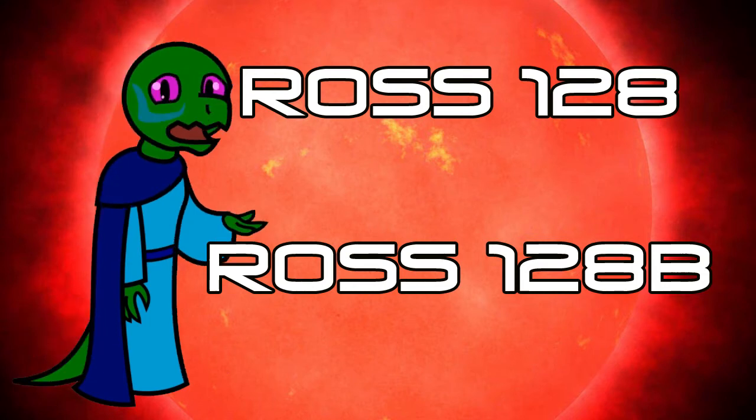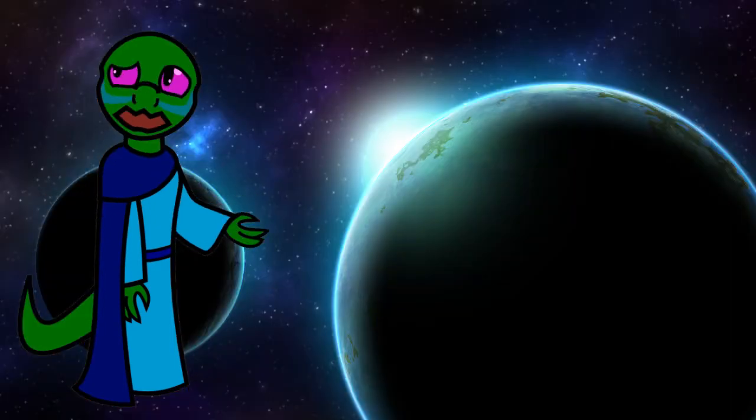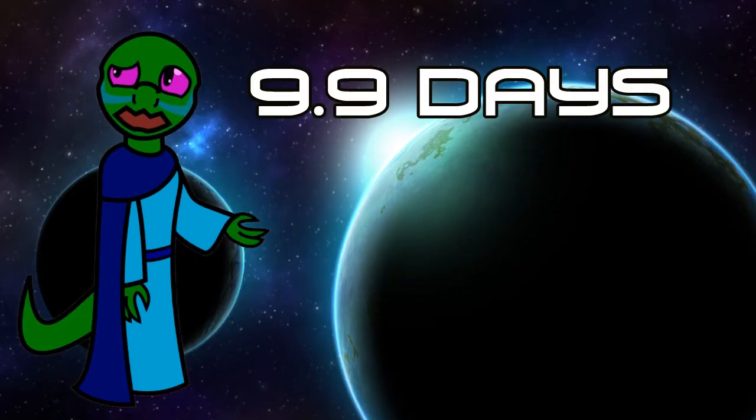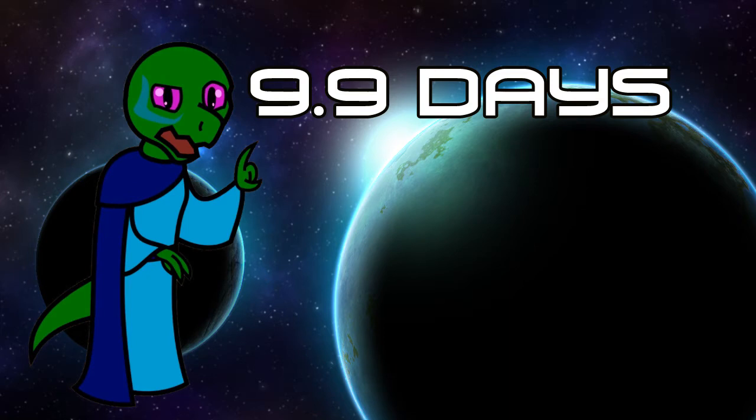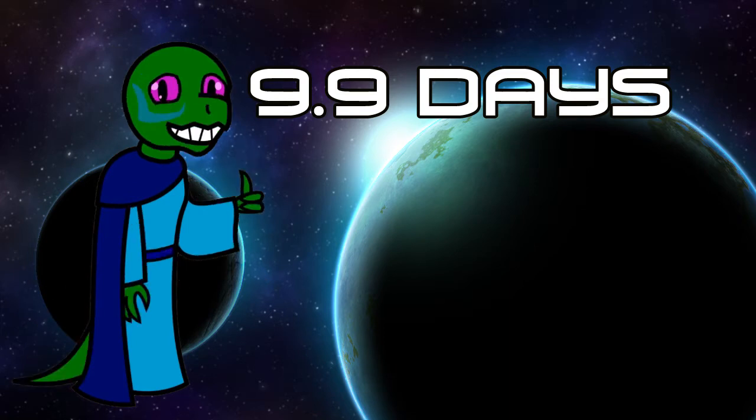Ross 128 b is a terrestrial exoplanet with an orbital period of 9.9 Earth days. That means anyone living on the planet would be celebrating their birthday every other week.